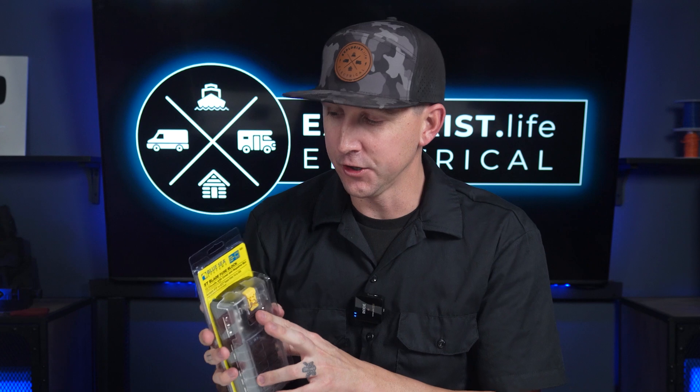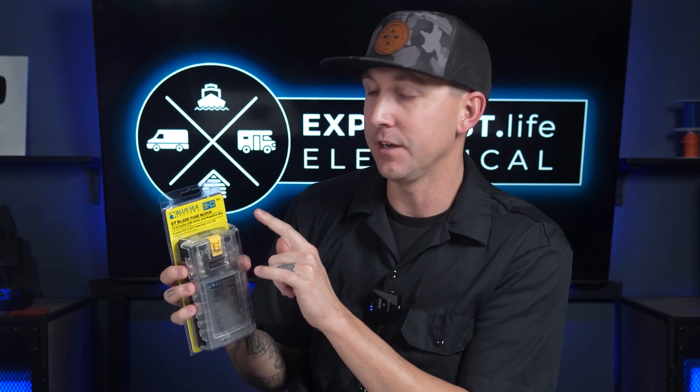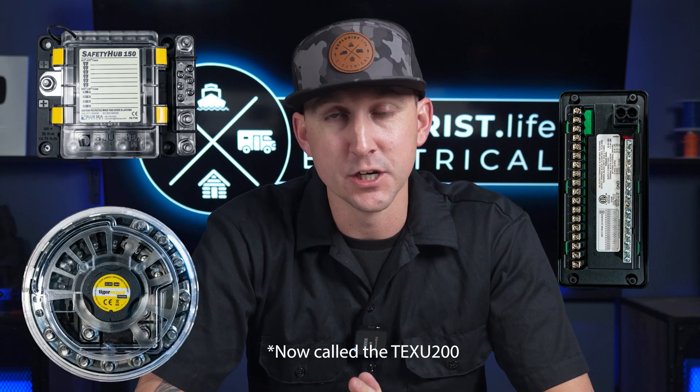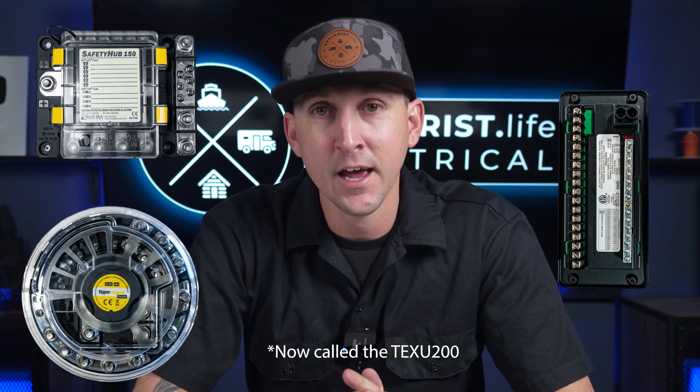And lastly, before we get started, the fuse block that we're using in this particular demo is the Blue Sea Blade Fuse Block. Now, there's several different types of fuse blocks on the market, like the Progressive Dynamics Fuse Block, the Blue Sea Safety Hub, the Tiger Expedition UFO 200, and all of those are realistically going to be connected in much the same way.